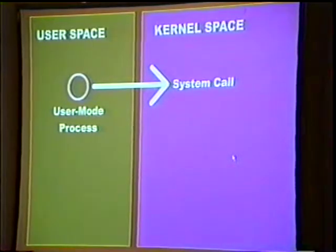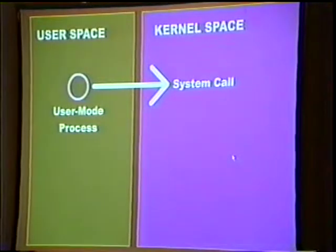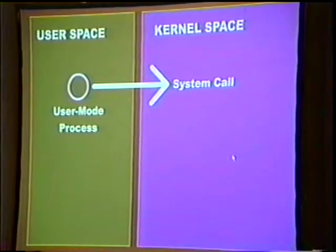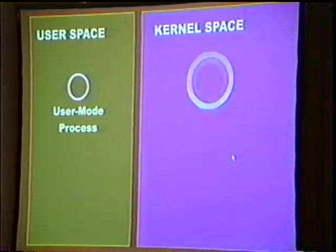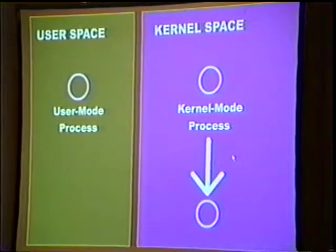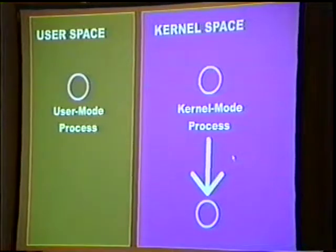Under Linux, the interrupt is 0x80, and under NT it would be 0x2E. A kernel mode process, of course, doesn't have to use a system call to communicate with other kernel mode processes — it's all within kernel mode space. When I make a call into kernel mode from user mode, I have an opportunity to do a security check on the security descriptor or the access that's been granted to the process making the call.